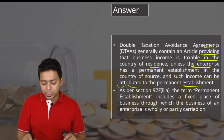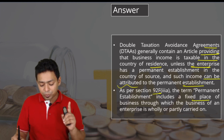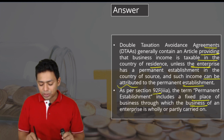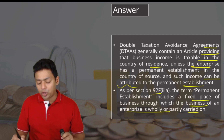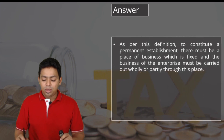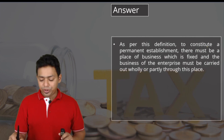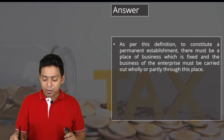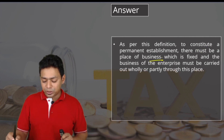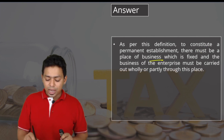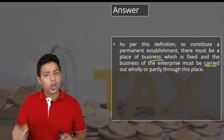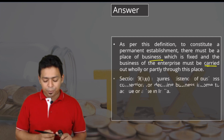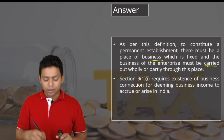As per Section 92F, a permanent establishment includes a fixed place of business through which a business of an enterprise is wholly or partly carried on. To constitute a permanent establishment, there must be a place of business that is fixed, and the business of the enterprise must be carried on wholly or partly through that particular location.